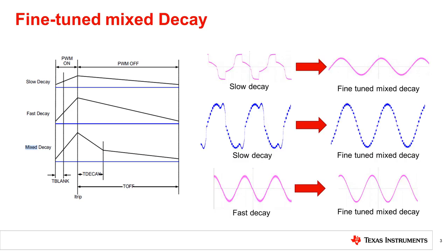Mixed decay combines fast decay and slow decay with a fixed fast decay and slow decay ratio. A fine-tuned mixed decay, achieved by adjusting the fast and slow decay ratio, is capable of bringing the winding current down when it is driven higher than the ideal sinusoidal current, which could cause motor mechanical vibration. It is also able to avoid the fast decay higher current ripple amplitude, which causes higher EMI noise and less torque from the ideal sinusoidal current.